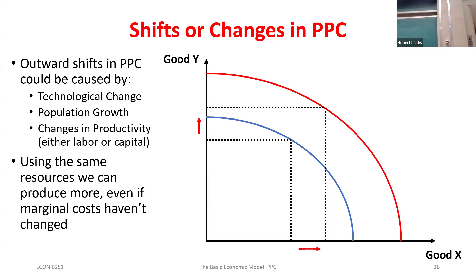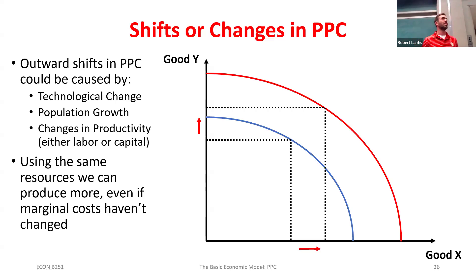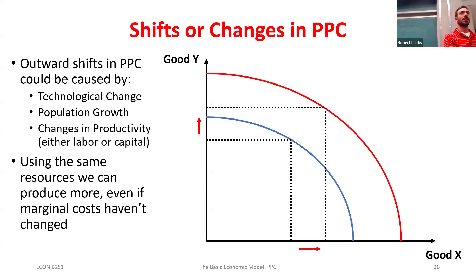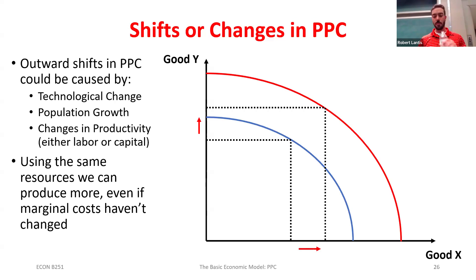Changes in productivity — generally caused by technology change — also shift the PPC out. We can get changes in productivity from the amount of money we invest into what we call capital. Investing even into something like education: every one of you, hopefully after this class and after you leave this university, will be more productive in whatever role or job you take. You're making an investment into human capital — your skills, your brain, your knowledge. We can also make investments into physical capital like machinery.